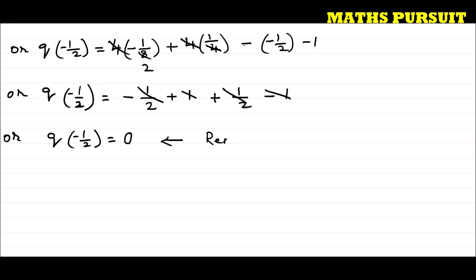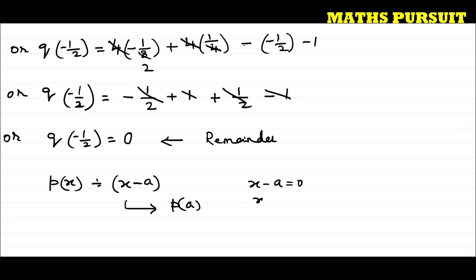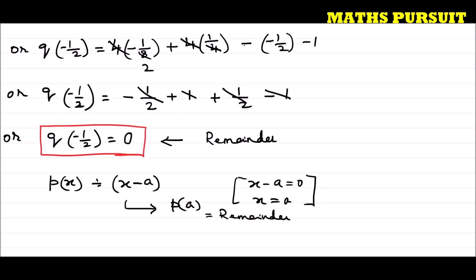We are getting q(-1/2) = 0. This 0 is our remainder as per the Remainder Theorem. As per the theorem, when P(x) is divided by x - a, the remainder is P(a). By replacing the value of x with a and getting P(a), that is our remainder. So this remainder is 0.